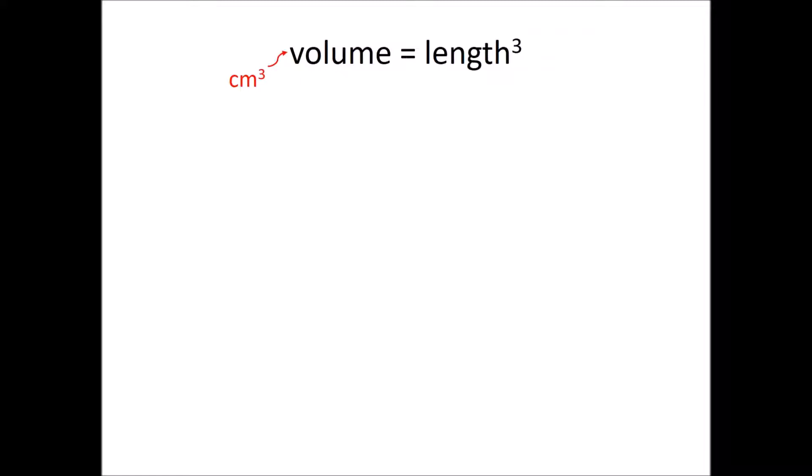Now the volume must be in cubic centimeters, so our length must be given in centimeters as well, but it's not. It's given to us in 4.95 angstroms, so we will need to convert that to centimeters. It is much easier if you convert that to centimeters first before you cube it. So we know that 1 times 10 to the 8th angstroms is equal to 1 centimeter. We'll use our dimensional analysis and convert that, making sure your units cancel, into centimeters.